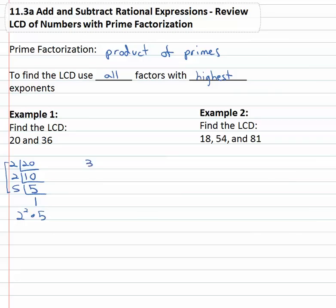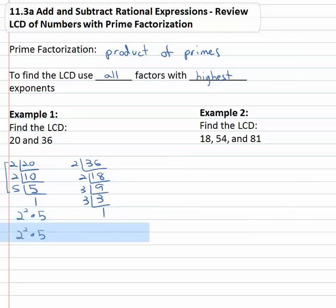Doing the same thing with 36: it's divisible by 2 eighteen times, which is divisible by 2 nine times, which is divisible by 3 three times, which is divisible by 3 once. So the prime factorization of 36 is 2 squared times 3 squared — the 2 appears twice and the 3 appears twice.